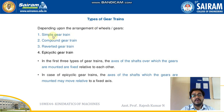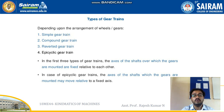Depending upon the arrangement of the wheels or gears, we can classify gear trains into four major categories: simple gear train, compound gear train, reverted gear train, and epicyclic gear train. In the first three types, the axis of the shafts on which the gears are mounted are fixed relative to each other. In the case of the epicyclic gear train, the axis of the shafts on which the gears are mounted may move relative to a fixed axis.